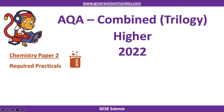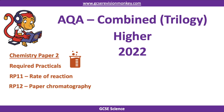Hello and welcome to this Revision Monkey video on the required practicals that are going to be in the 2022 Chemistry Paper 2 exam. This video is for the AQA specification, for combined scientists — the Trilogy version of combined science, which means you do six papers at the end of your course, all one hour and 15 minutes long. This video is for higher tier students, and the practicals to focus on are rate of reaction and paper chromatography.